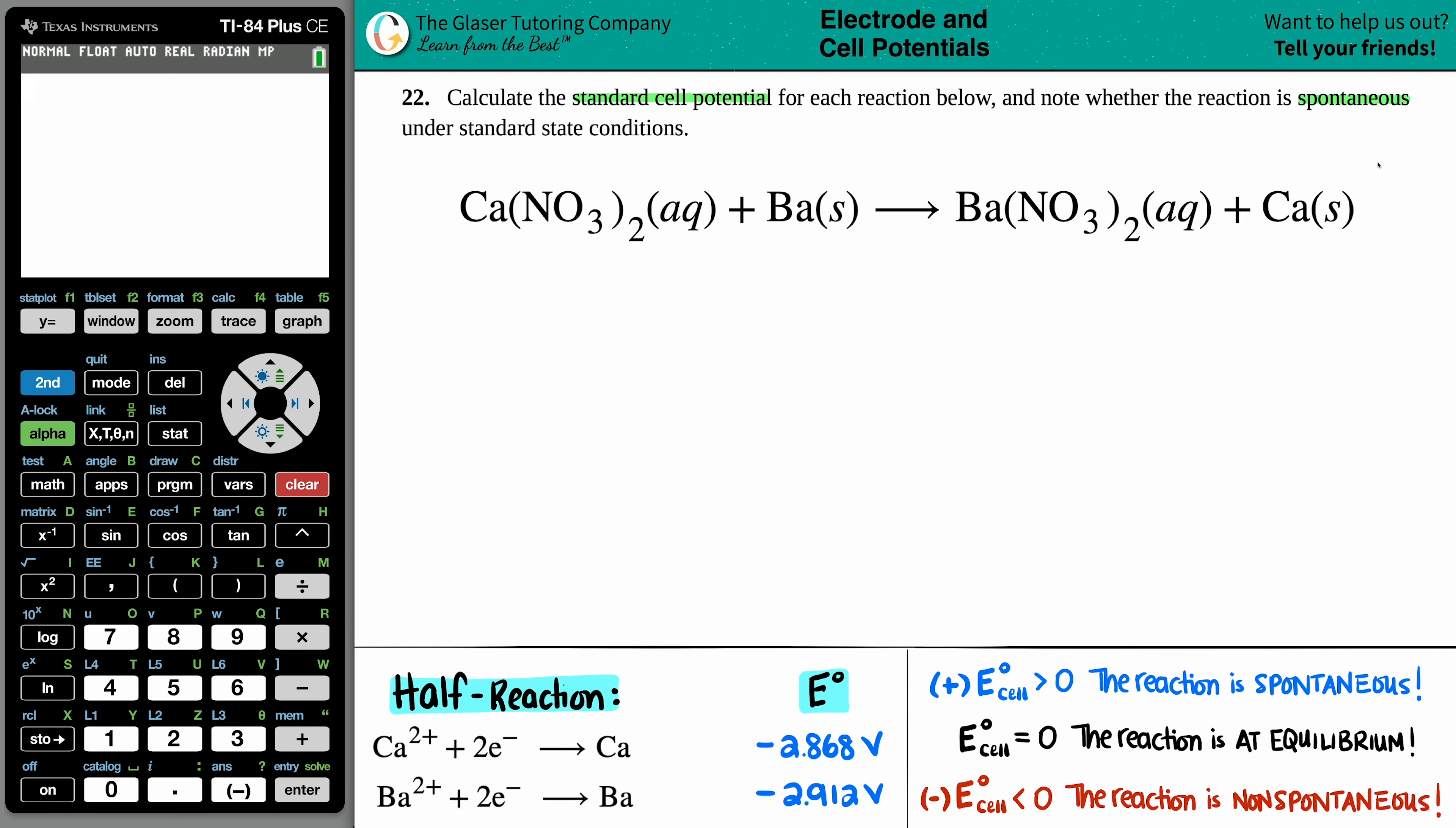At first glance this looks like a single replacement where we're replacing a metal, kicking out the calcium and calcium's now hanging out by itself. But more specifically, if we're asking for a standard cell potential, cell potentials always come from oxidation and reduction reactions. So this has to be an oxidation reduction reaction.